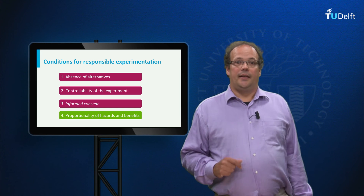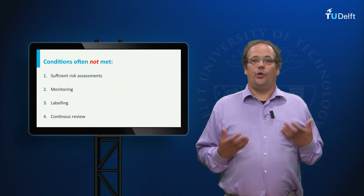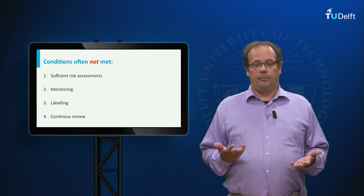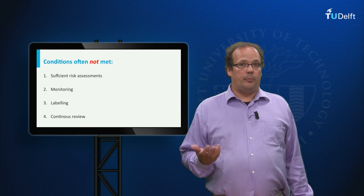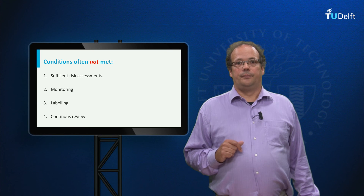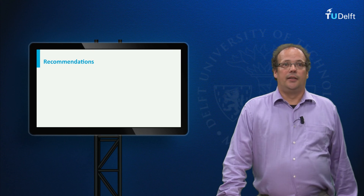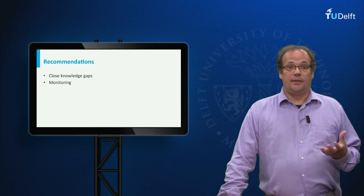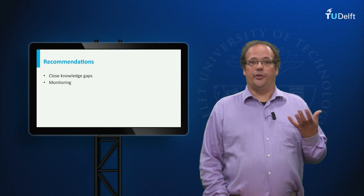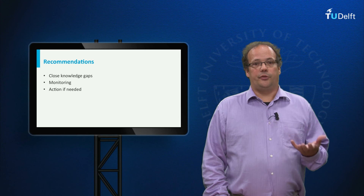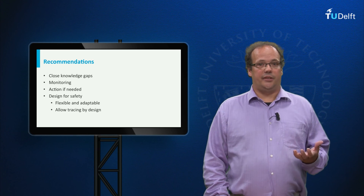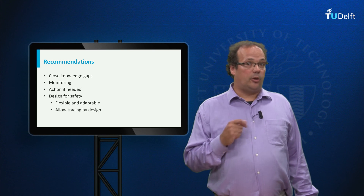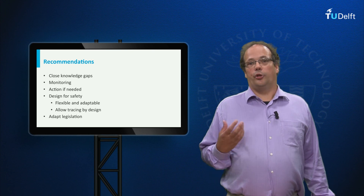Applying these four conditions to the case at hand, the following conditions were not fulfilled: more risk assessment could have been done before introduction, and monitoring, labelling, and continuous review were missing. On this basis we made the following recommendations: first, close existing knowledge gaps as far as reasonably possible; second, monitor possible effects of nanoparticles; third, take necessary action based on such monitoring; fourth, ongoing design for safety — for example, designing nanoparticles so they can be traced, which would help monitoring. Finally, we recommended changing the law to legally require both monitoring and labelling.